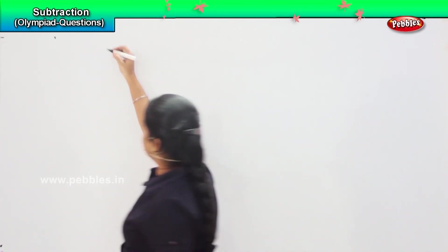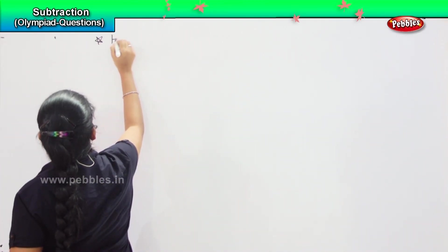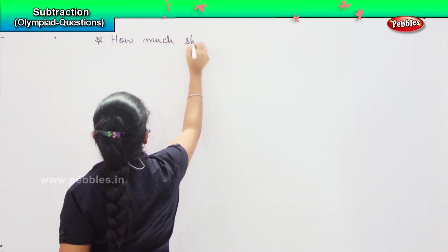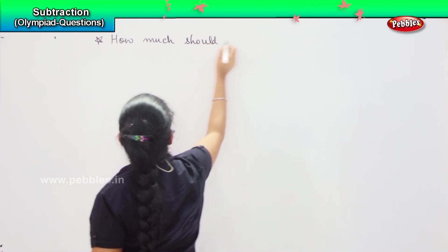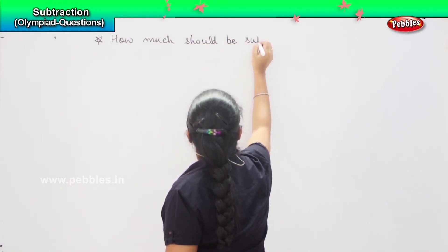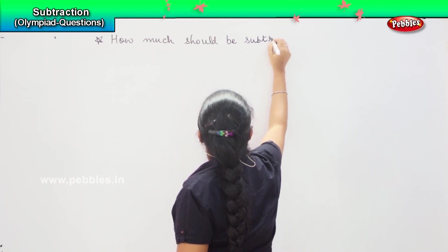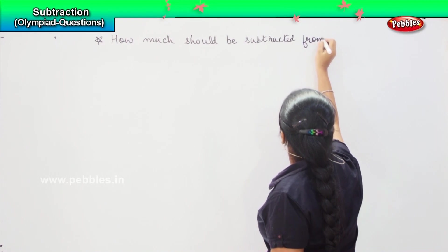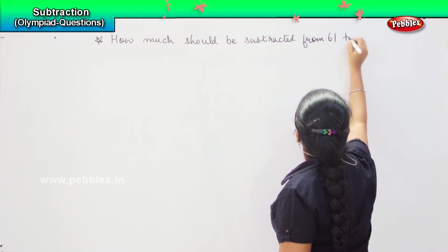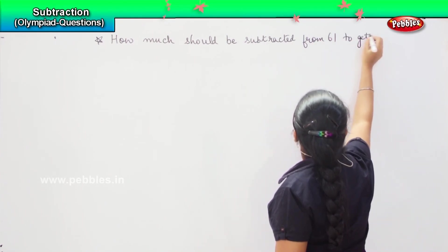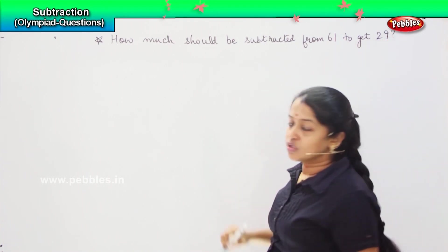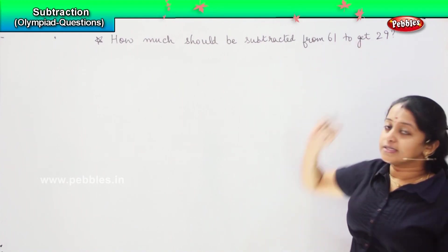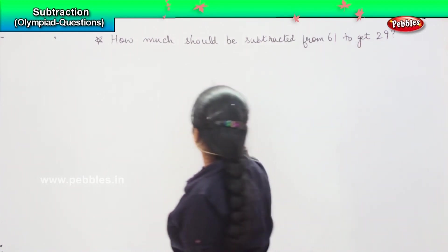The next question here is: how much should be subtracted from 61 to get 29? You should reduce some amount from 61 wherein your answer will come to 29. So, how will you solve?